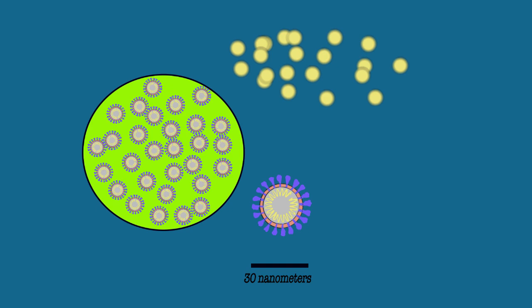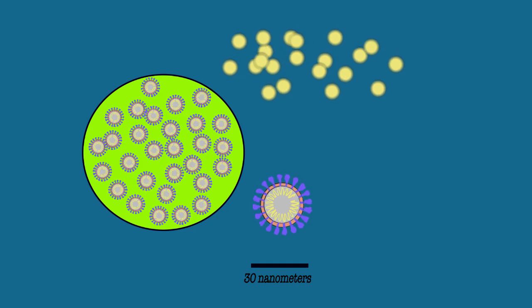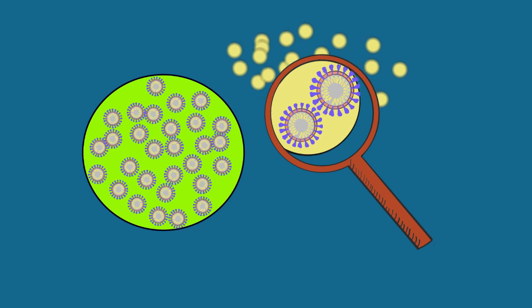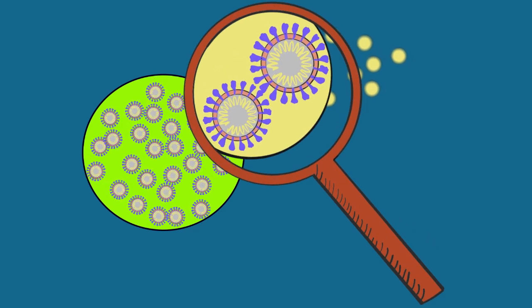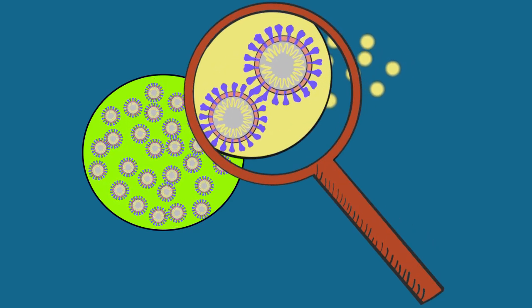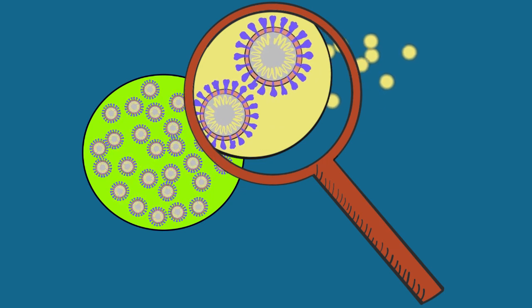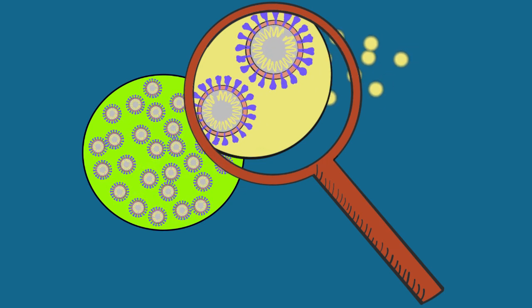In aerosols, when you get down to the few micron range or below that, there's going to be a lot fewer viruses, and chances are there'll be a lot fewer infectious viruses in those aerosols. So on a particle-to-particle basis, absolutely, the droplets are going to be much more potent.